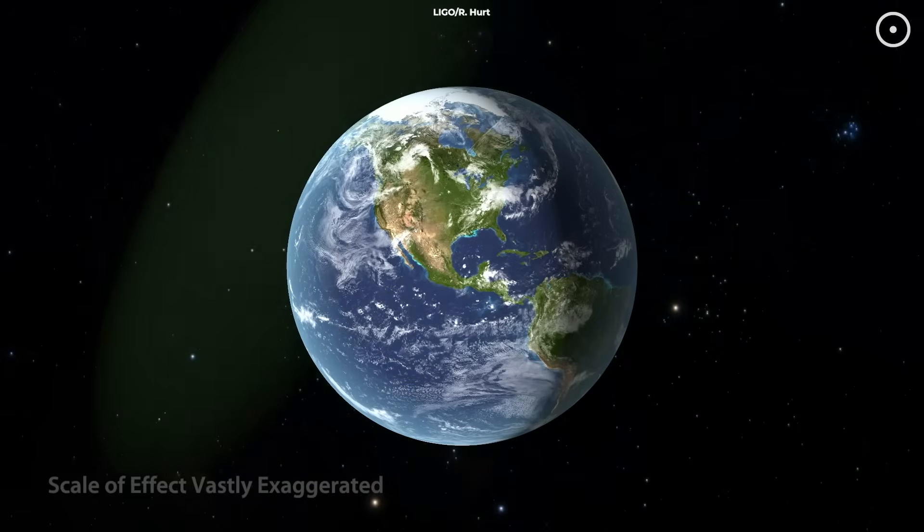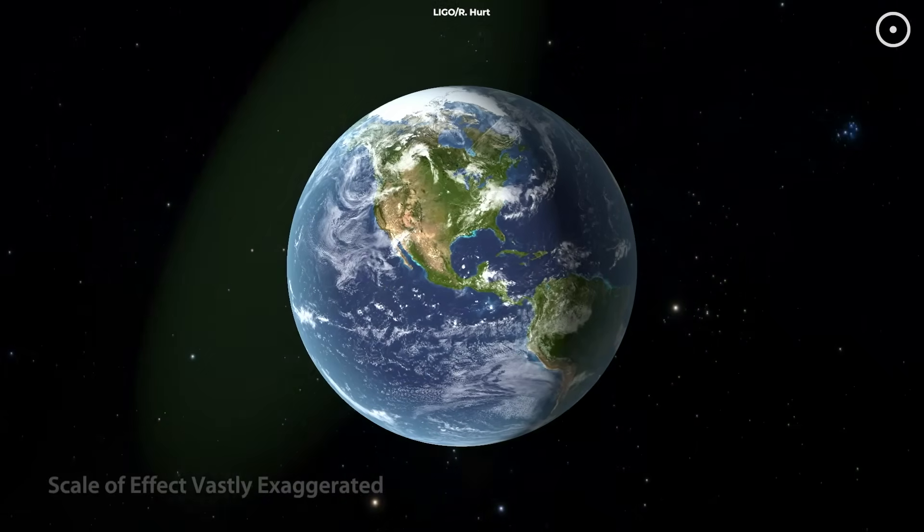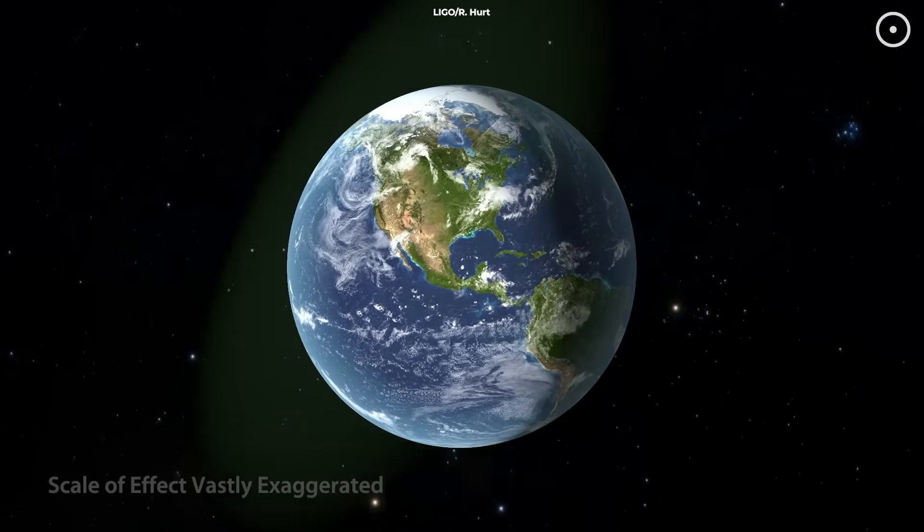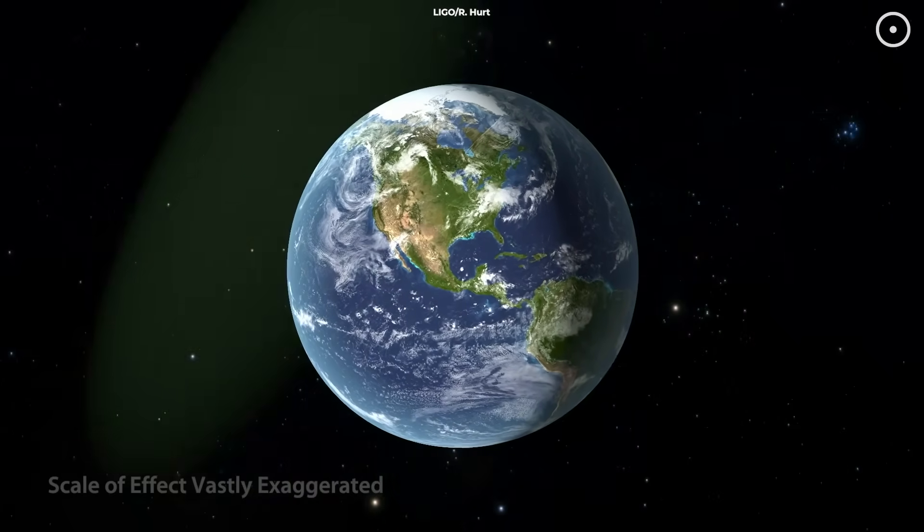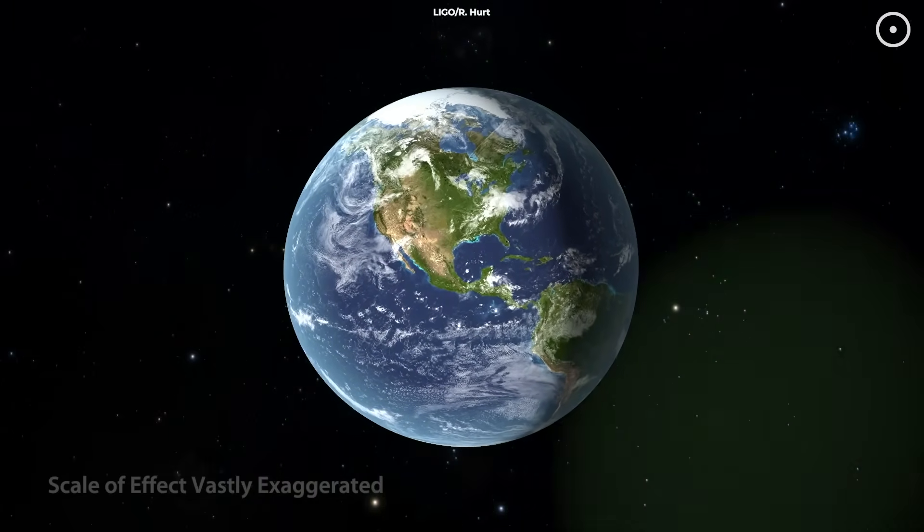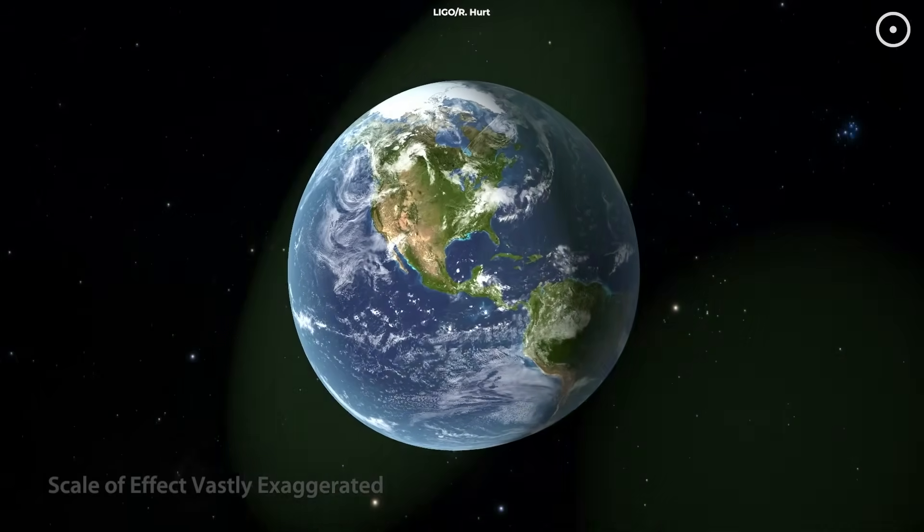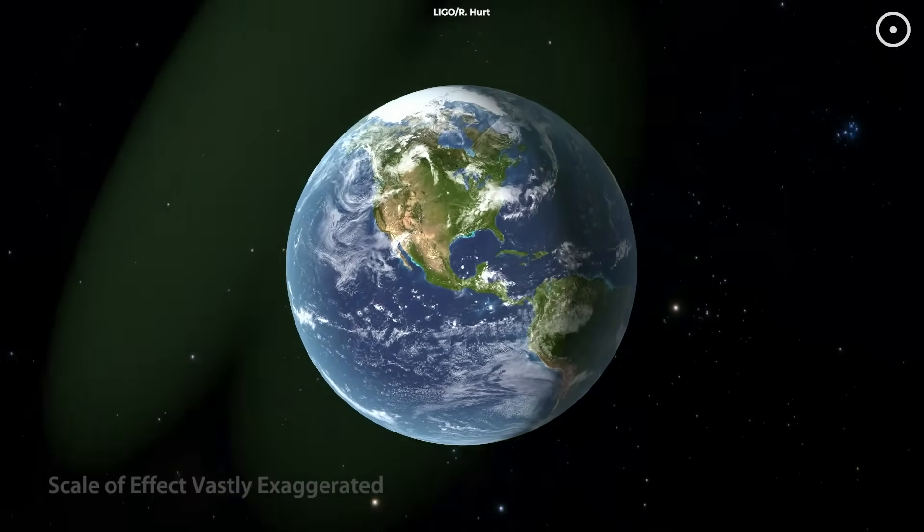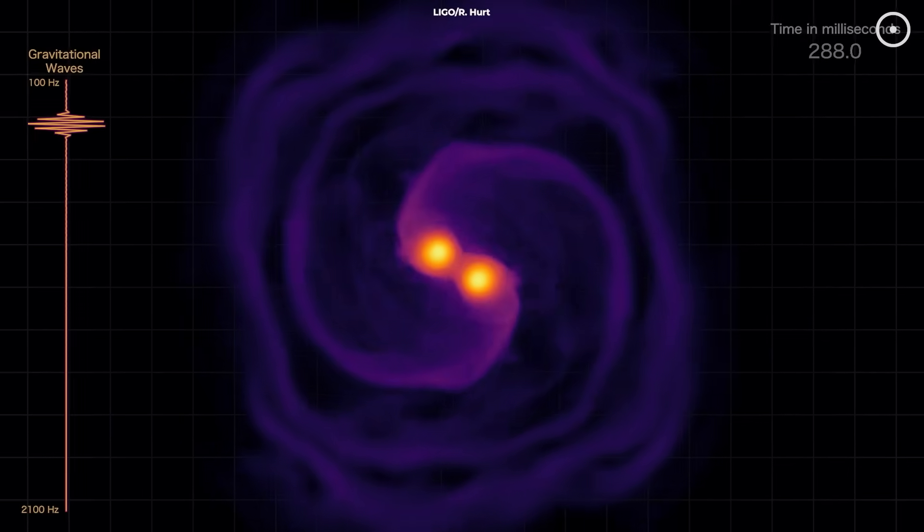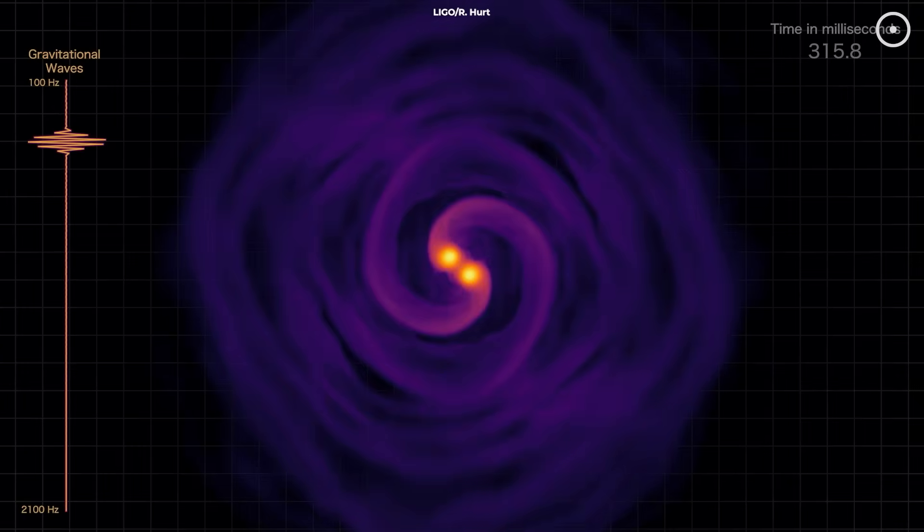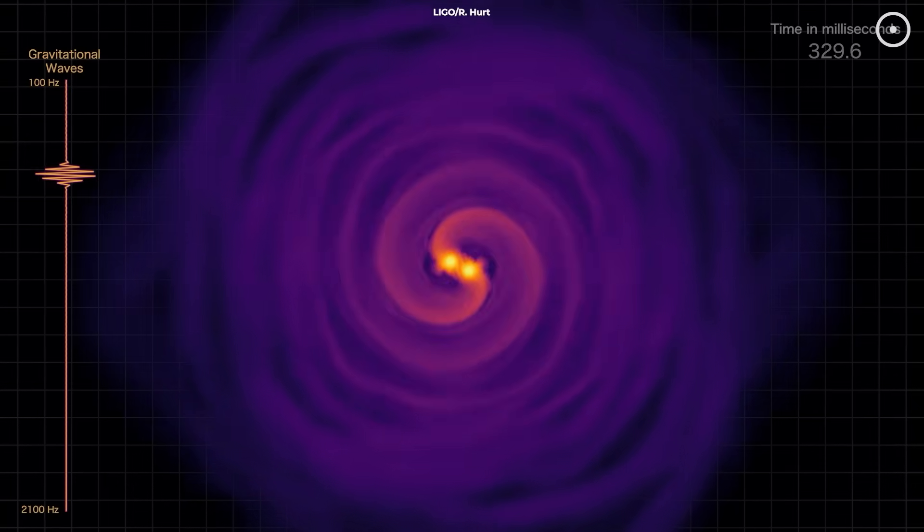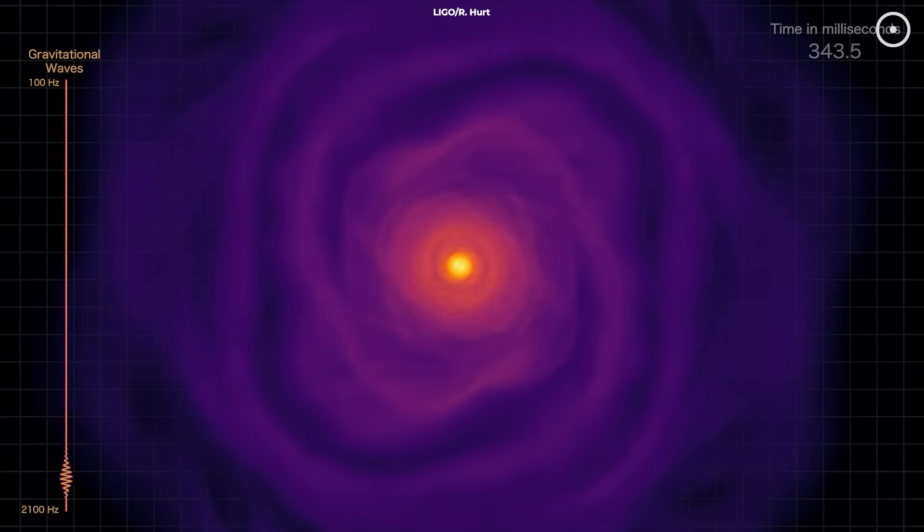Here's the wild part. When a gravitational wave passes through Earth, it actually compresses and stretches the planet ever so slightly. Don't worry, this effect is so tiny it's less than the width of an atom, but it's enough for incredibly precise detectors like LIGO to measure. These mergers release more energy in a fraction of a second than all the stars in the universe combined during that time. They're literally shaking the universe.